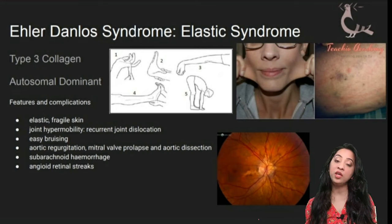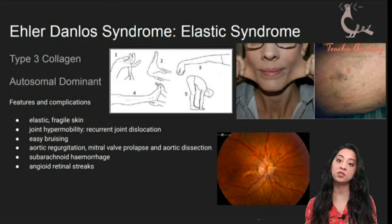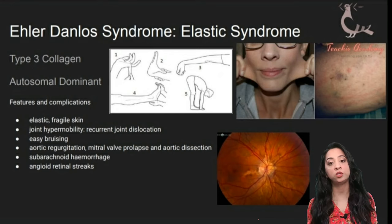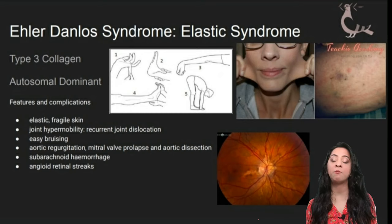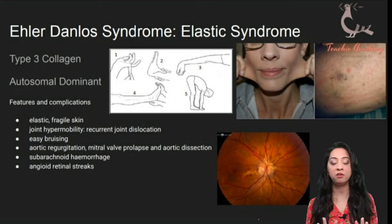There are about 11 to 13 types of Ehlers-Danlos syndrome described with quite different severities, but the things you need to remember for your PLAB 1 exam are: type 3 collagen, elastic skin, elastic joints, and angioid retinal streaks.